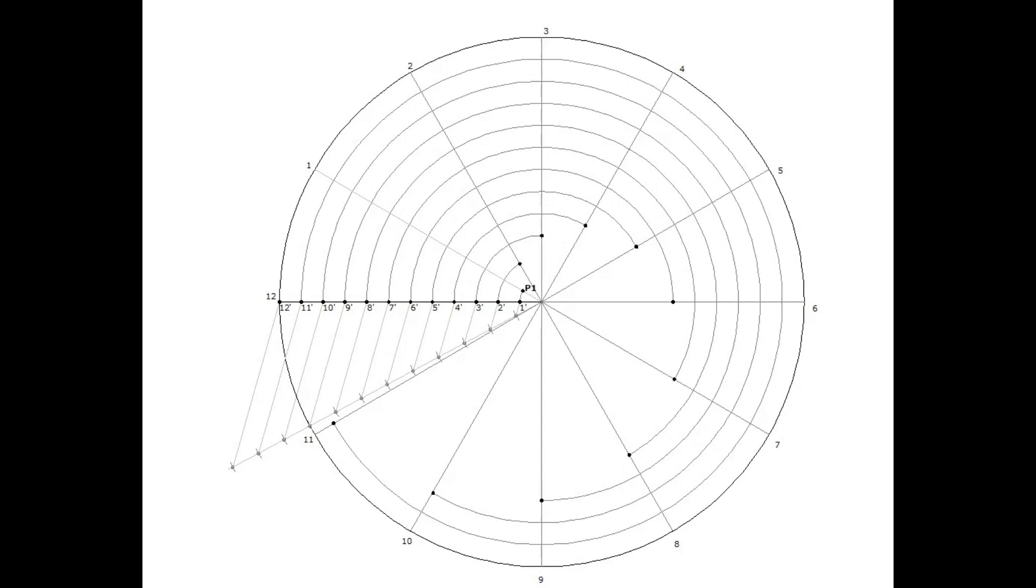Mark these points as P1, P2, and so on up to P12. Join these points by a smooth curve. This curve is the spiral.